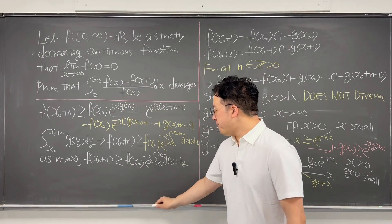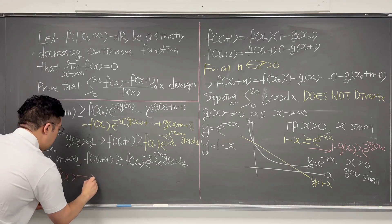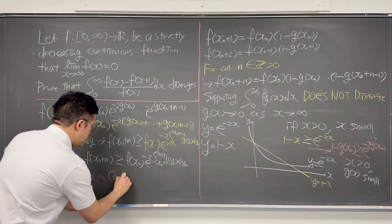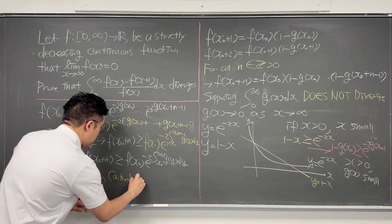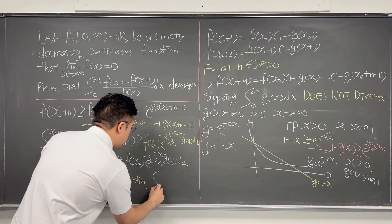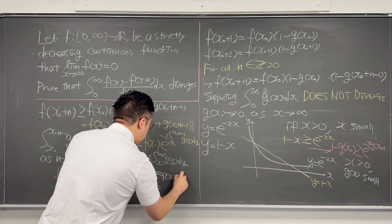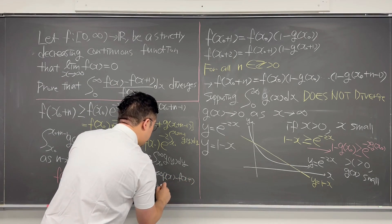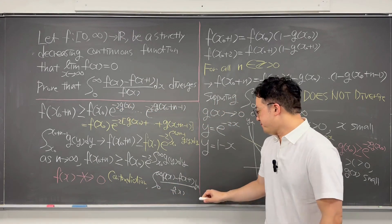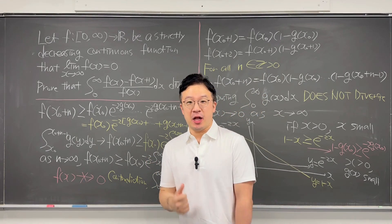What this means is f(x) is not going to 0 — so this is a contradiction. Which means this integral from 0 to infinity of (f(x) minus f(x+1)) over f(x) dx must diverge. It's a pretty interesting question from the Putnam Math Competition. I'll be back soon.